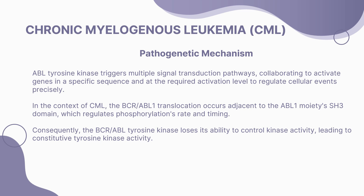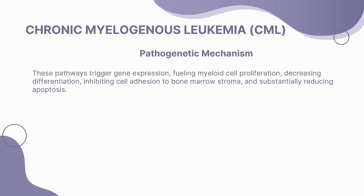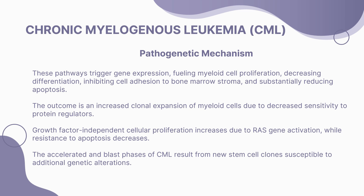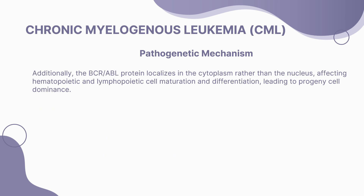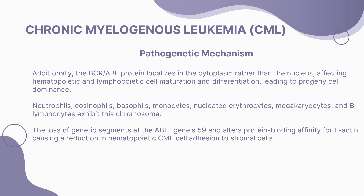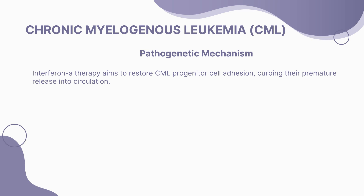In CML, the BCR-ABL1 translocation occurs adjacent to the ABL1 SH3 domain, causing constitutive tyrosine kinase activity. This enzyme initiates signal transduction pathways, promoting myeloid cell proliferation, inhibiting differentiation, and reducing apoptosis. The outcome is increased clonal expansion of myeloid cells, decreased apoptosis sensitivity, and altered adhesion to bone marrow stroma. Accelerated and blast phases result from stem cell clones with additional genetic alterations. Interferon A therapy aims to restore proper cell adhesion, curbing premature cell release.